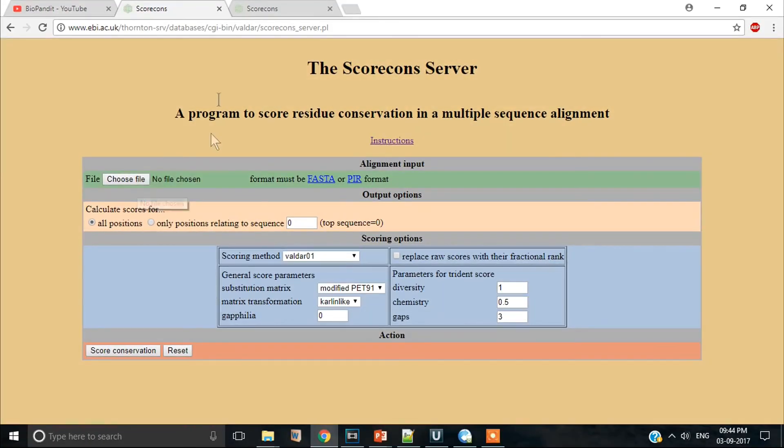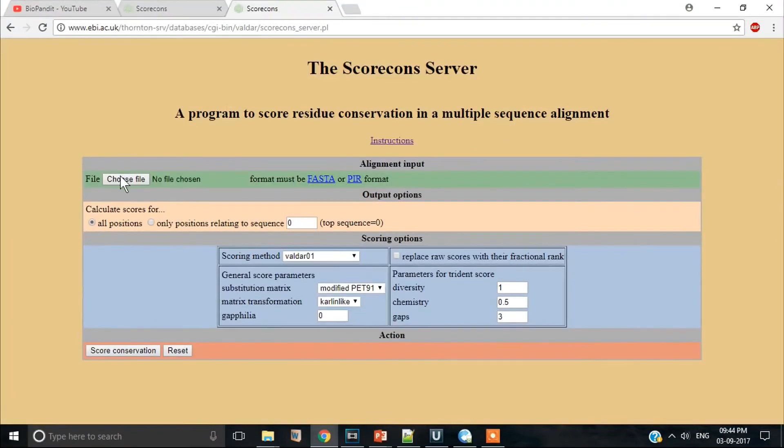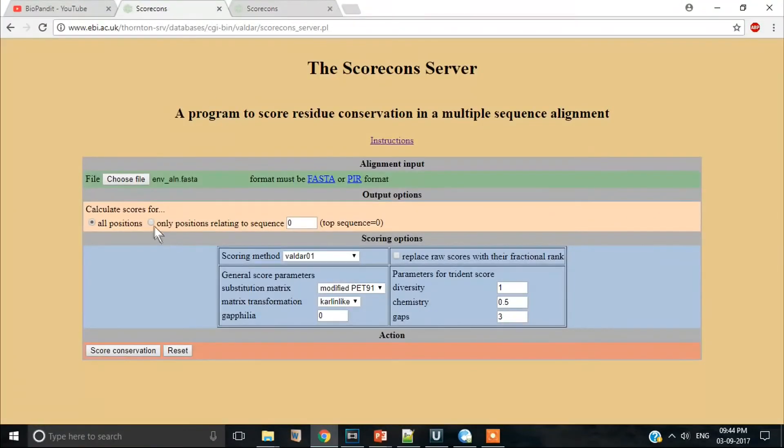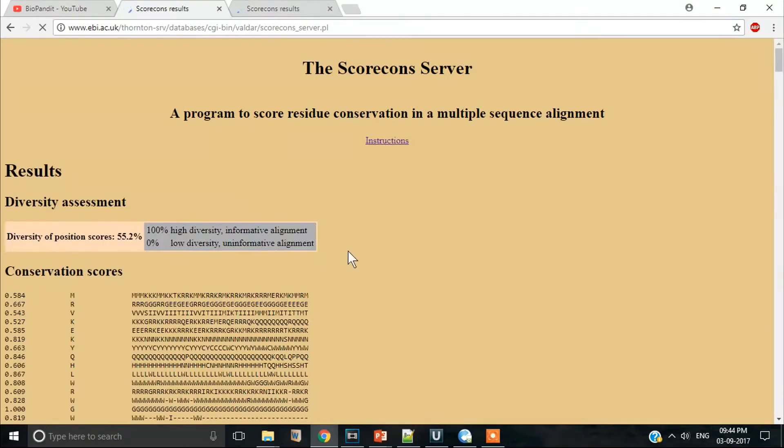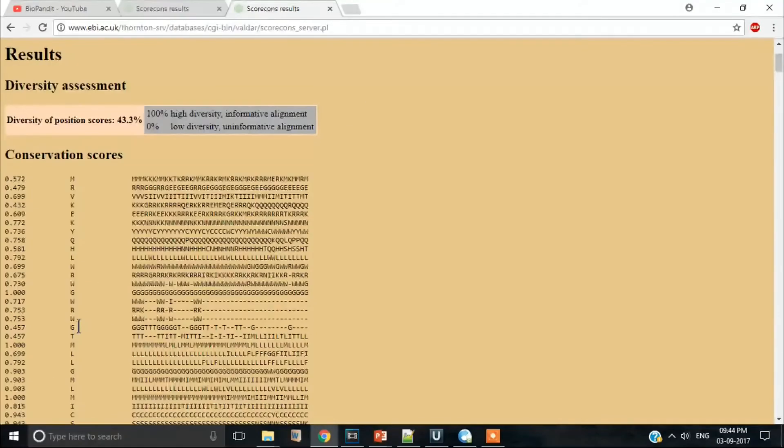Click on this choose file link and provide your alignment as the input. Select the option that calculates the score for only positions relating to sequence 0. Now select any of these two scoring methods: Entropic 21 types or Entropic 7 types and see the results.